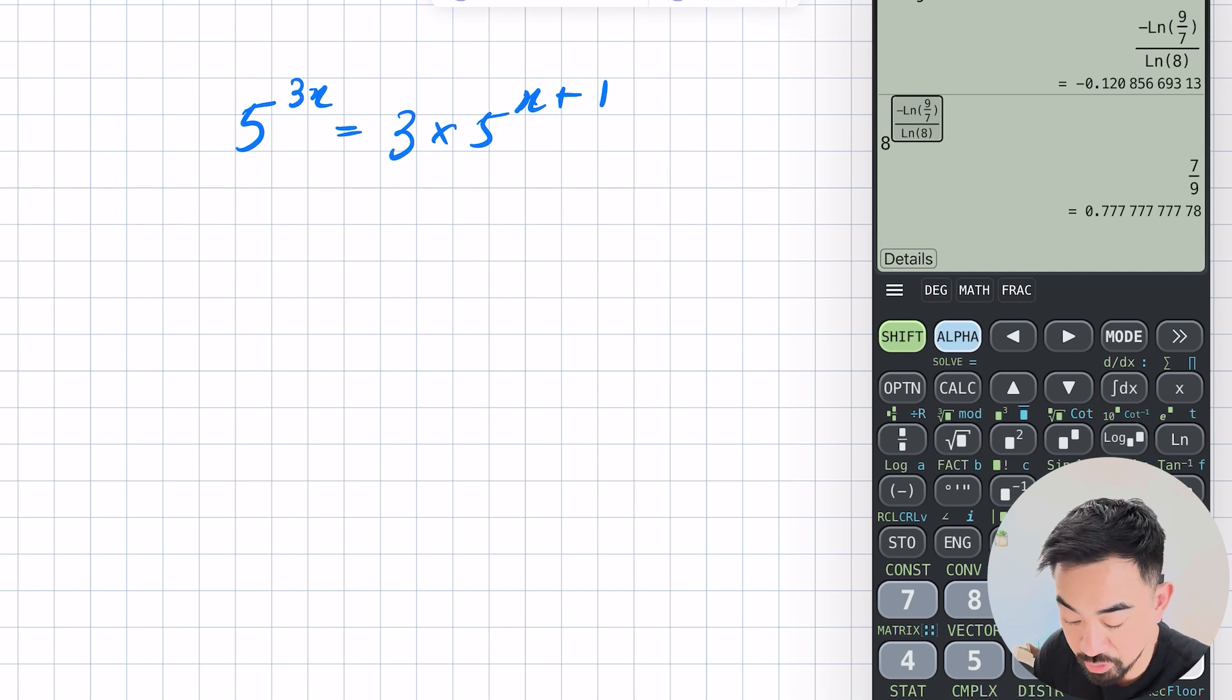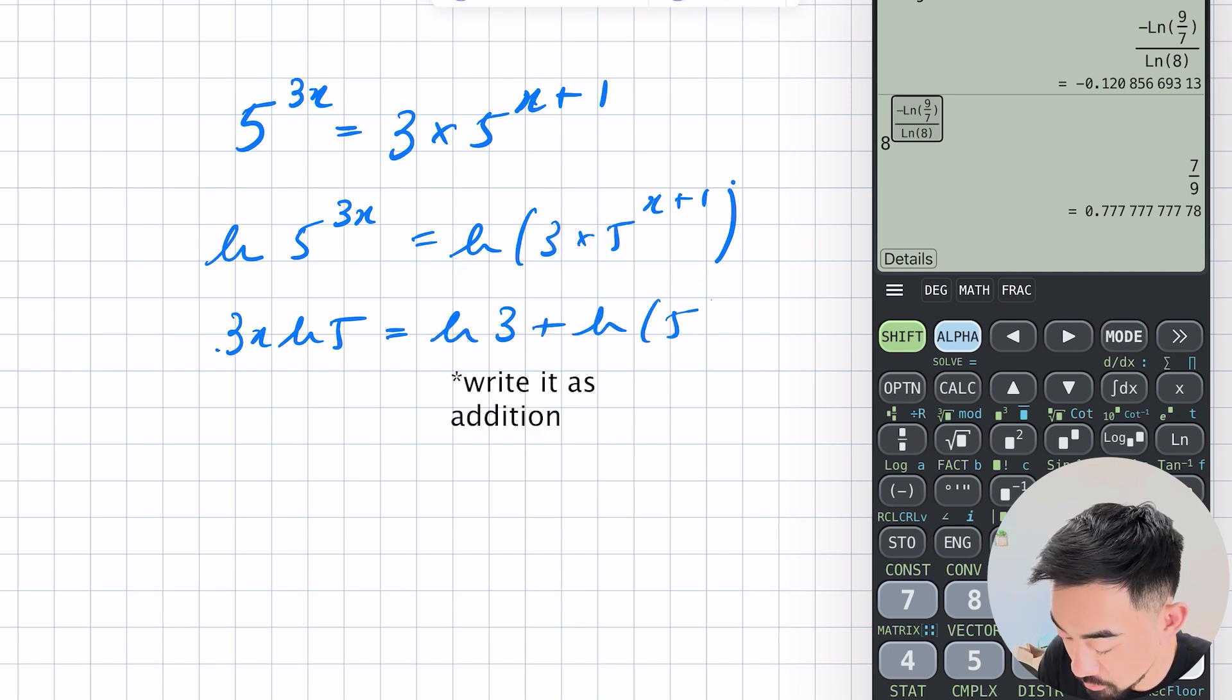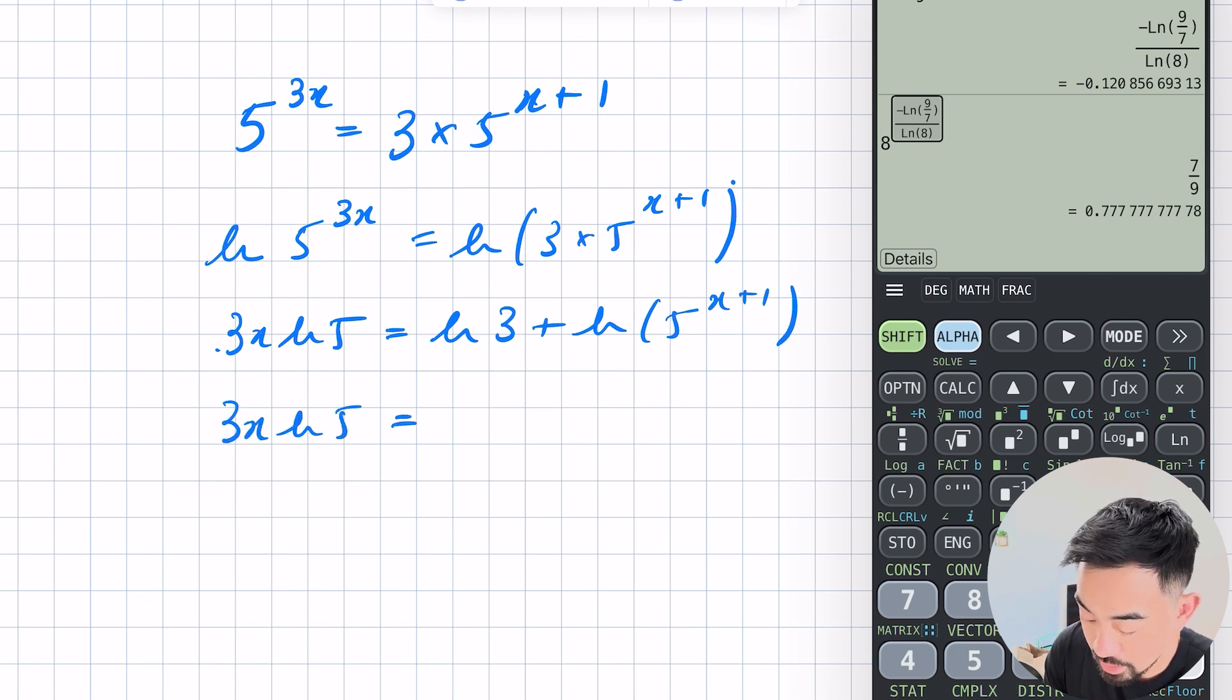All right let's have a look at this example. It's 5 to the power of 3x is equal to 3 times 5 to the power of x plus 1. So this time we've got the exponents on either side but the process is still the same. Let's log both sides to begin with. ln 5 to the power of 3x equals ln 3 times 5 to the power of x plus 1. So this bit here will be 3x ln 5. Now remember from your log laws when you have a multiplication here you can split it up and write that as addition.